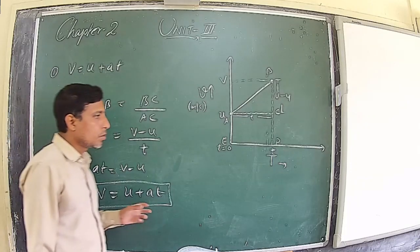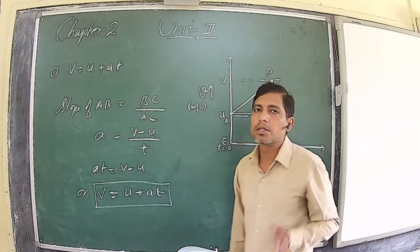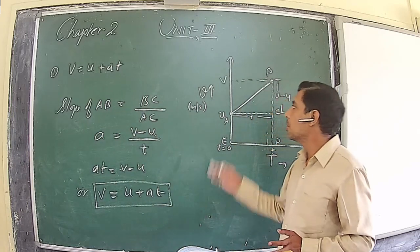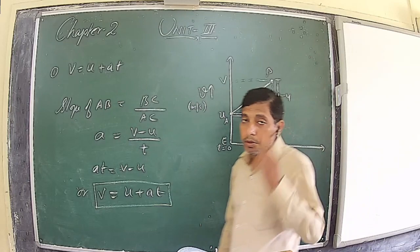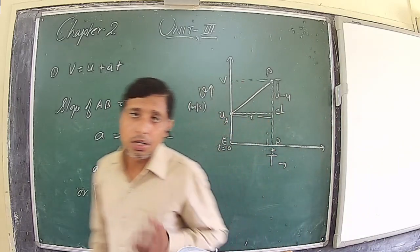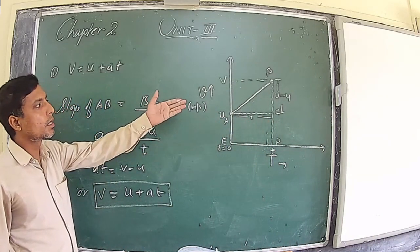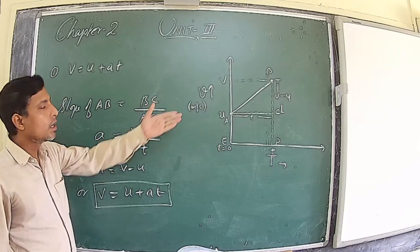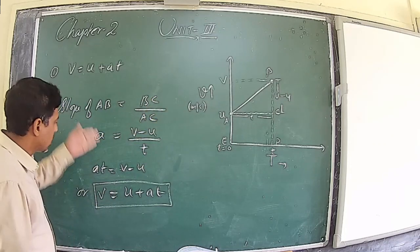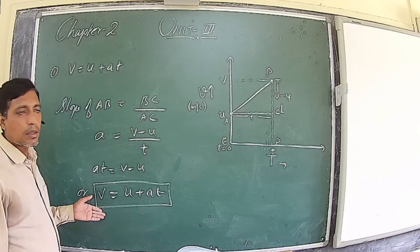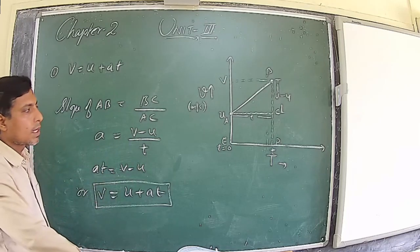To derive all three equations of motion, we first plot a graph between velocity versus time, where the body was already moving with velocity u and after time t it gains velocity v. We find the slope of the graph and by transposing we get v = u + at. Now for the second equation of motion.